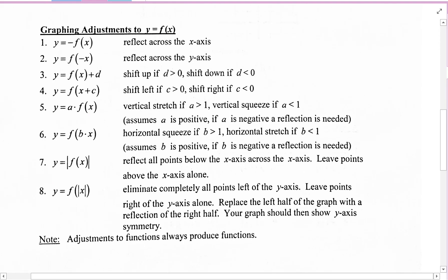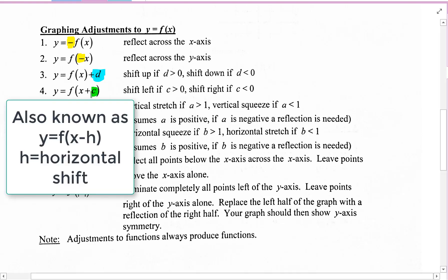Graphing adjustments to y equals f of x. What do these things mean? y equals negative f of x. When you have a negative in front, it changes the sign of your output. y equals f of negative x. That's changing the sign of your input. Adding something to the function is a vertical shift. Adding or subtracting to the input of the function is a horizontal shift.